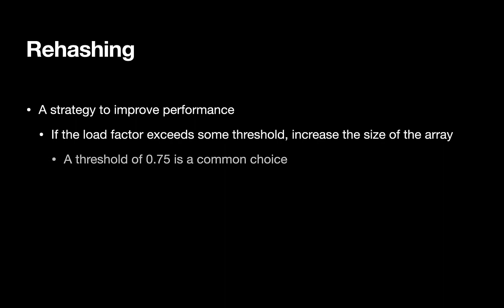So 0.75, 75% is a common choice for this threshold, and that seems somewhat intuitively reasonable. The basic idea is if you're 75% full, the likelihood of a collision is increasing. So if collisions are getting likely, you should probably make more space to try and reduce the likelihood of collisions and get closer to this order one time complexity constant time goal.